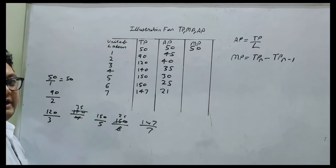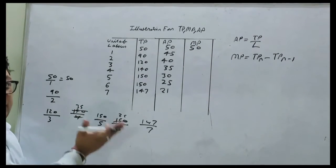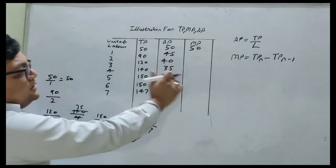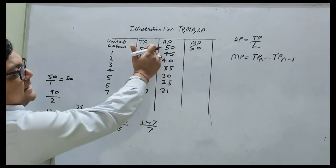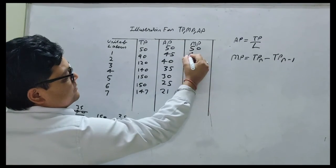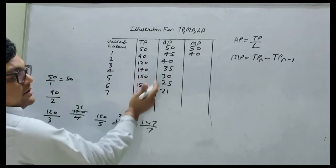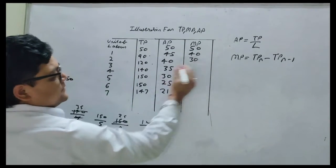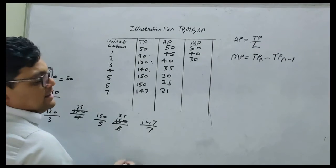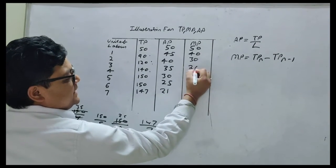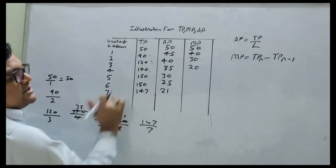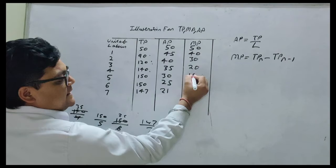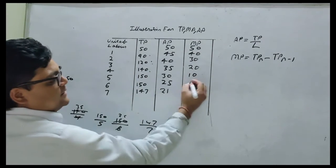Okay, now we have to find out MP. So 90 minus 50, it will become 40. We have to deduct total product from the previous row. 120 minus 90 becomes 30. 140 minus 120 becomes 20. 150 minus 140 becomes 10. 150 minus 150 becomes 0.